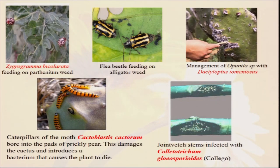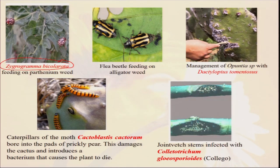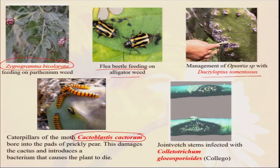This is a picture showing how different types of insects or maybe pathogens are being used. This is called Zygogramma bicolorata — I have already told this is used to feed on the plant of Parthenium. Everywhere, wherever you go — the roadside, no man's land, maybe railway track — lots of weeds are growing, and there is an experiment that has been done where they are feeding on Parthenium. Similarly, flea beetle — they are feeding on the alligator weed. And for Opuntia weed, we can use Dactylopius ceylonicus. Caterpillar of the moth, that is Cactoblastis cactorum — they bore into the pads of prickly pear and can also reduce that damage. Similarly, there is also Colletotrichum being used to always control the weeds.